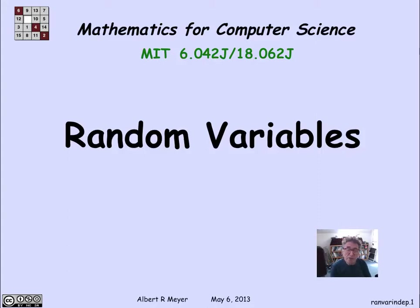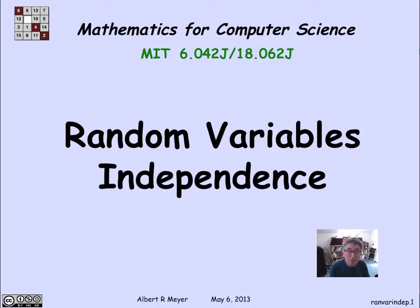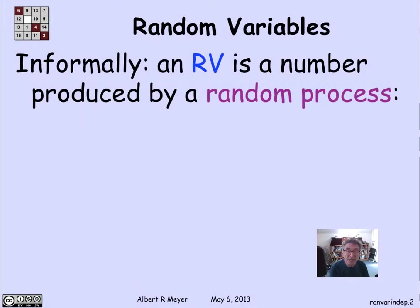We just saw some random variables come up in the bigger number game, and we're going to be talking about random variables — formally what they are, and their definition of independence for random variables. But let's begin by looking at the informal idea. A random variable is a number that's produced by a random process.